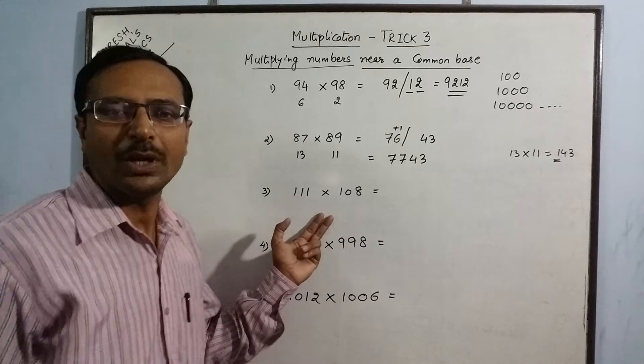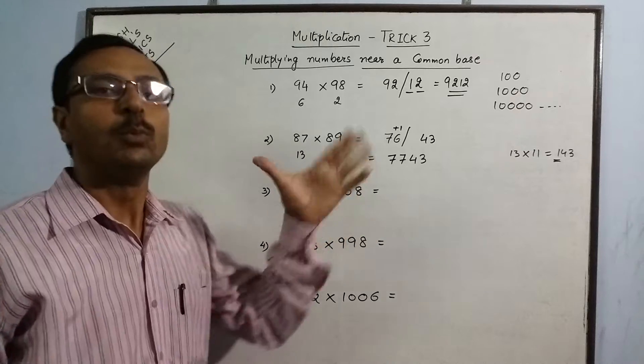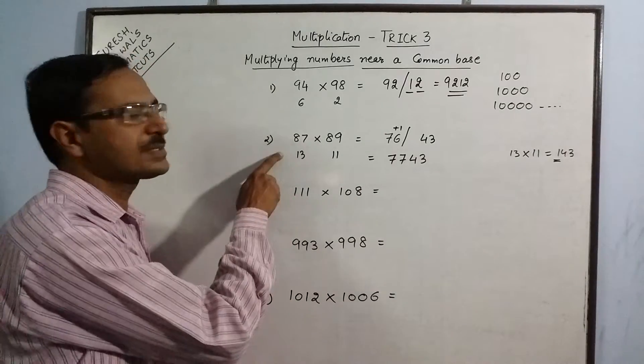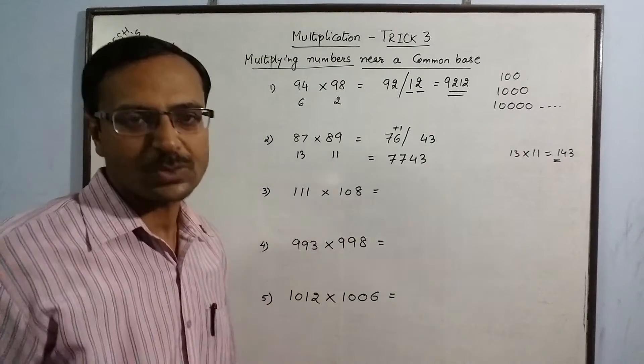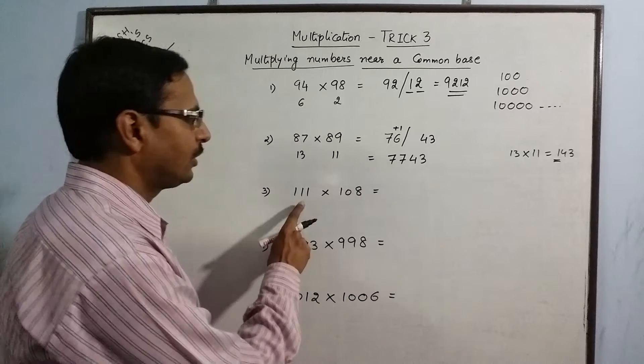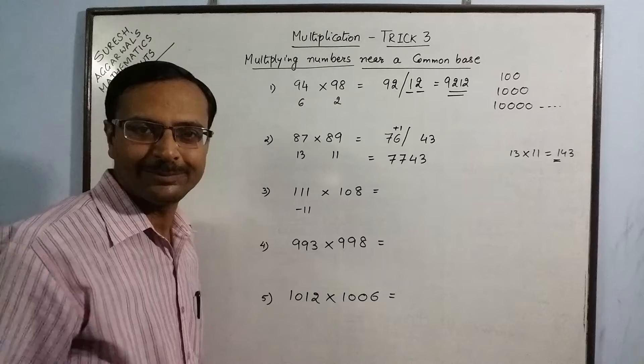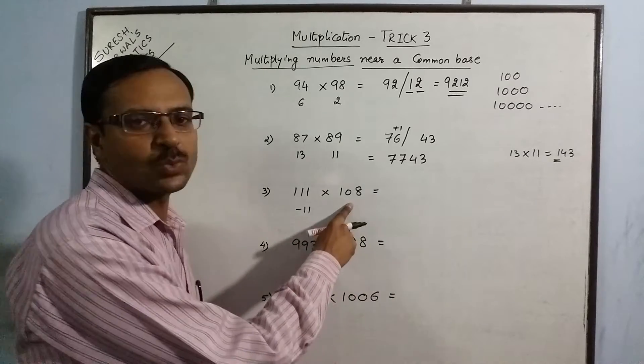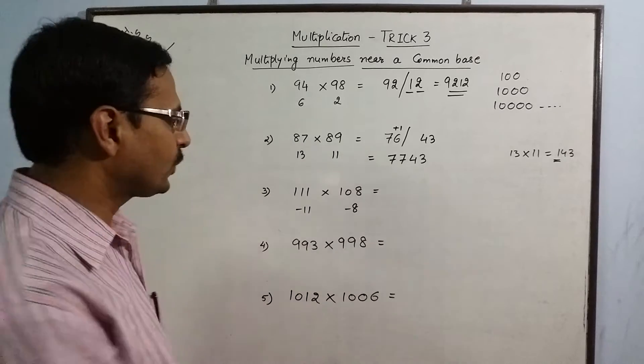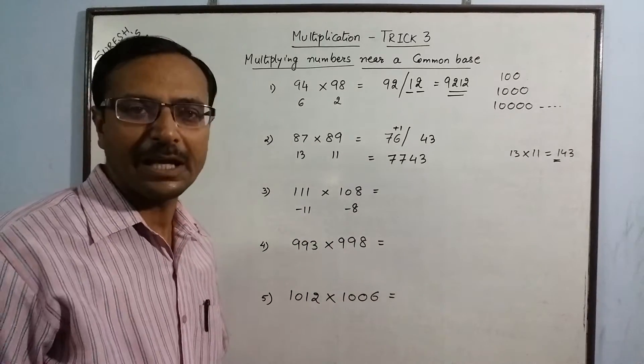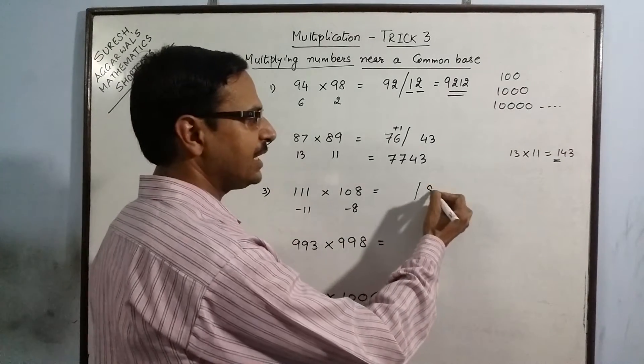Simultaneously, we have to learn the method when the two quantities to be multiplied are more than the base quantities. In these two examples, the numbers were below the base quantities. Now, these two numbers are above the base quantities. So, 100 minus 111 gives us negative 11. 100 minus 108 gives us negative 8. Now, you can see the product of minus 11 and minus 8 is again positive. The first part of the answer, 11 into 8 is 88.